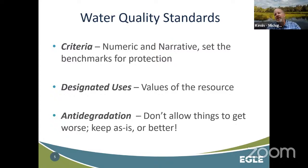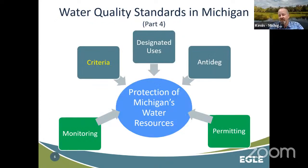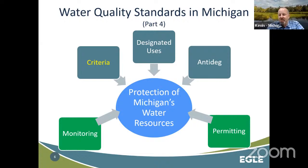Every state and tribe with delegated Clean Water Act authority must develop water quality standards with these three components. In Michigan, we've got the criteria, the uses, and the anti-degradation component, and they all feed into protection of the great aquatic resources Michigan has, as well as the other Great Lakes states. Within EGLE — Environment, Great Lakes, and Energy, which is what we're called in Michigan now, formerly the Department of Environmental Quality — we develop monitoring and permitting programs to support these water quality standards and ensure we continue to have gains in water quality.